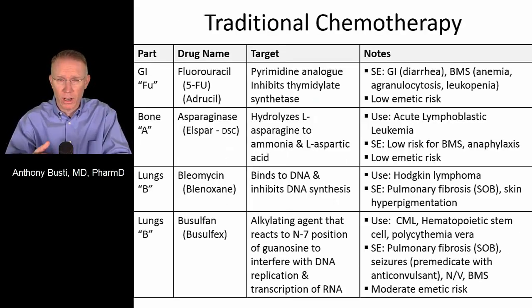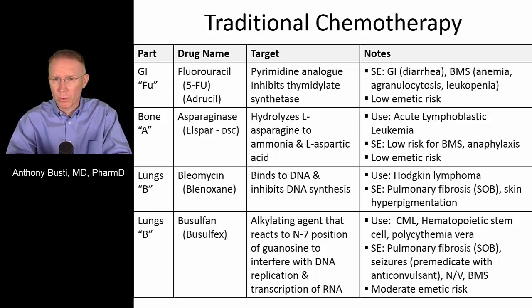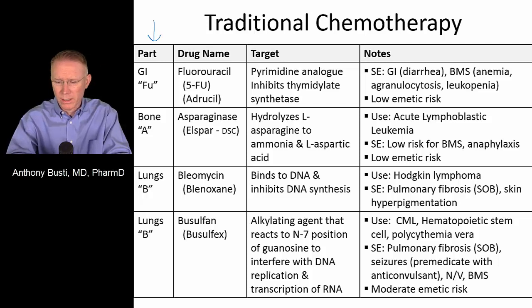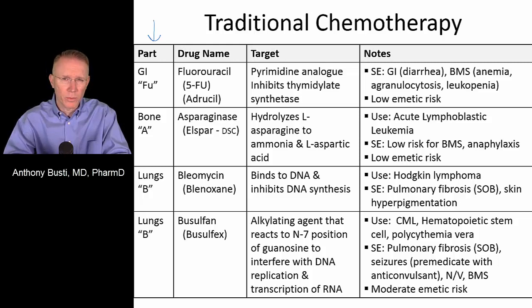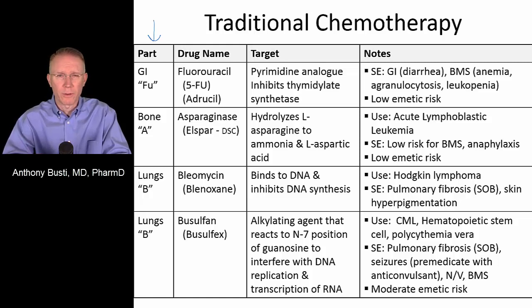Let's start off by going through the drugs, mostly in alphabetical order by generic name. If you look at the first column, you'll see the part of the body and the anatomical correlation. Then the drug name and traditional marketed brand name, then the main target in column three, with the last column reflecting side effects and a few pointers. What we're really focusing on are those dose-limiting toxicities that are classic for board questions.